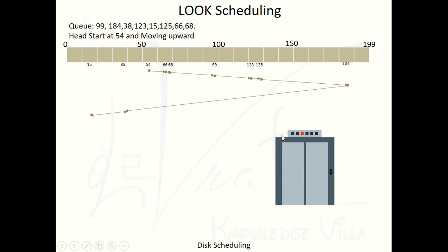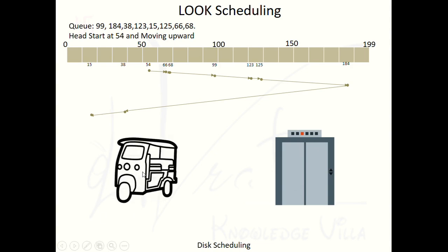If no one is waiting to go upward, there is no need to travel all the way to the sixth floor. The lift comes back from the third floor only. This same logic applies to a shuttle rickshaw — for example, a rickshaw traveling from Sargam to Gandhinagar and back.